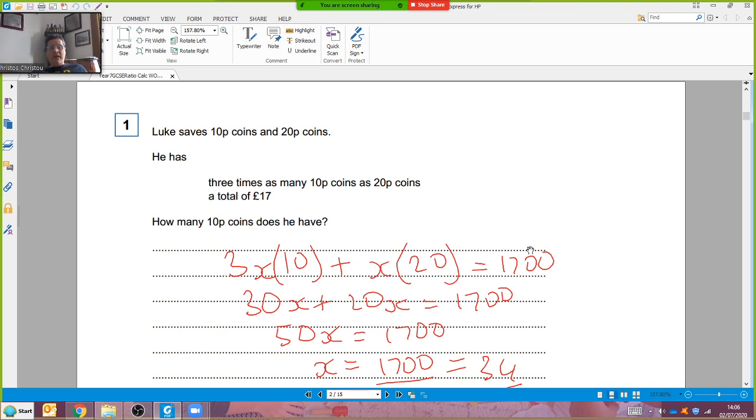Now I'm just going to multiply out my equation. I've got three times 10 is 30, so 30x, plus x times 20, which is 20x. I've got a certain number of 20p's. Now that all comes to 1700 pence.